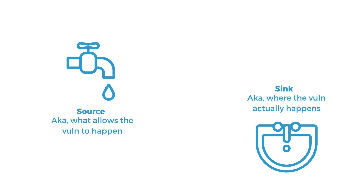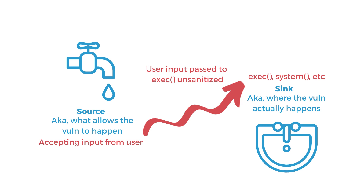Take command injection vulnerabilities, for example. A source could be a function that takes in user input, whereas a sink would be functions that execute system commands. If untrusted user input can get from the source to the sink without proper sanitization or validation, there is a command injection vulnerability. Many common vulnerabilities can be identified by tracking this data flow from appropriate sources to their corresponding sinks.